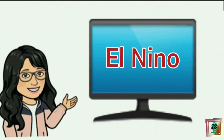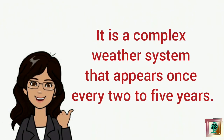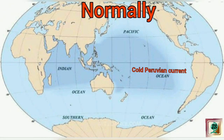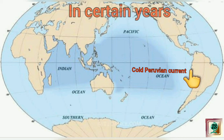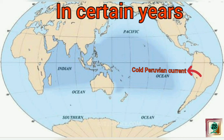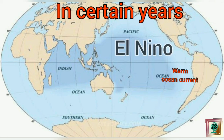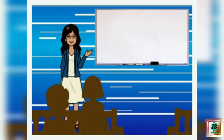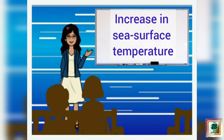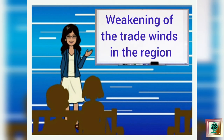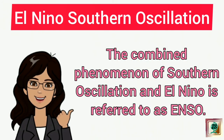A feature connected with the Southern Oscillation is El Niño. El Niño is a complex weather system that appears once every 2 to 5 years. Normally, cold currents flow past the coast of Peru, but in certain years this cold current is replaced by a warm current. This periodic development of a warm ocean current along the coast of Peru is known as El Niño. The presence of El Niño leads to an increase in sea surface temperature and weakening of the trade winds in the region. The combined phenomenon of the Southern Oscillation and El Niño is known as ENSO, or El Niño-Southern Oscillation.